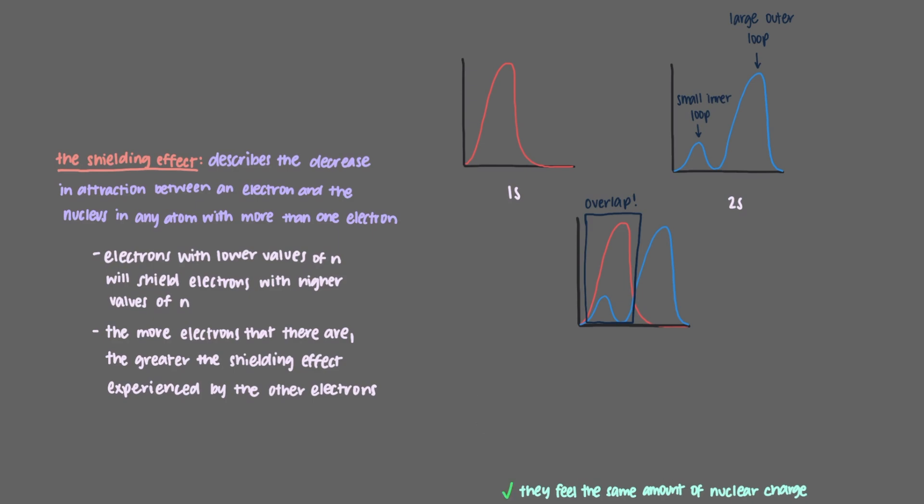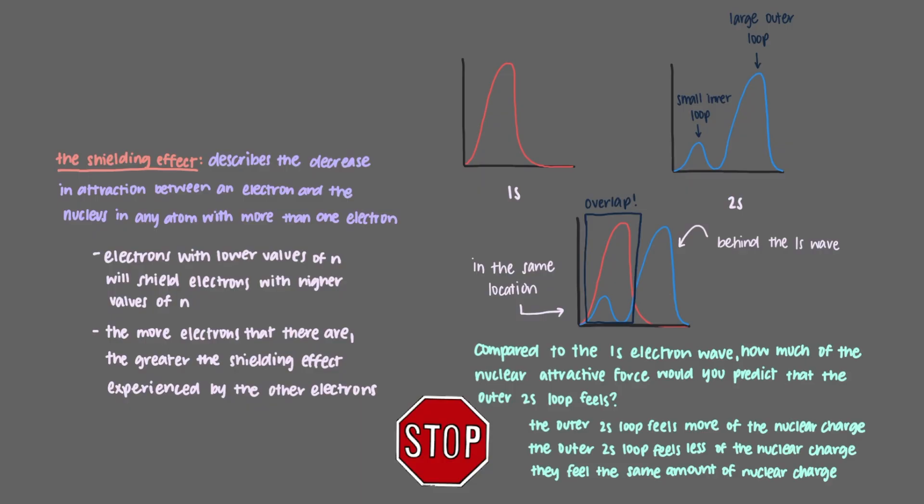The inner 2s loop and the 1s loop both feel the same magnitude of attractive force from the nucleus because they're in the same location. The outer 2s loop, however, is behind the 1s electron wave. Compared to the 1s electron wave, how much of the nuclear attractive force would you predict that the outer 2s loop feels?